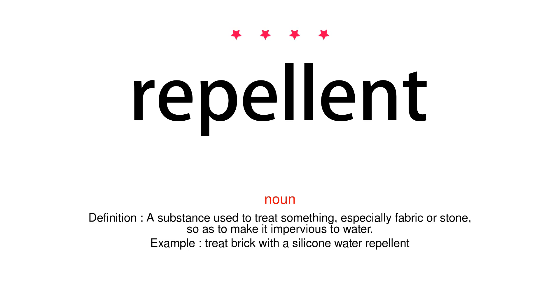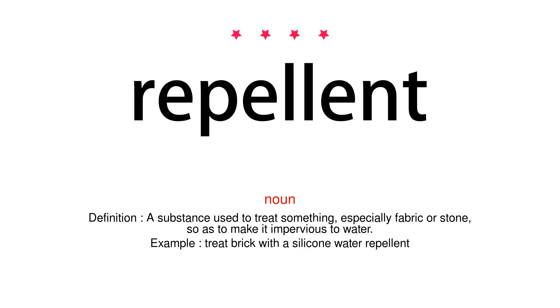Noun. Definition: a substance used to treat something, especially fabric or stone, so as to make it impervious to water. Example: treat brick with a silicone water repellent.